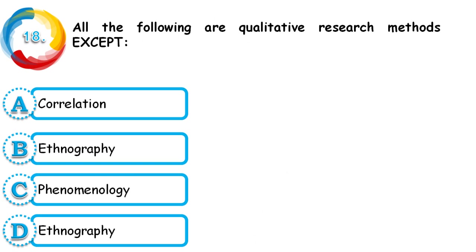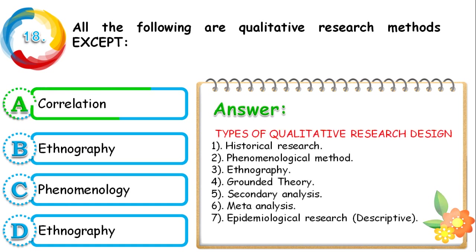Question 18: All of the following are qualitative research methods except — correlation, ethnography, phenomenology, or ethnography? The correct answer is correlation, which comes under quantitative methods. Qualitative research designs include historical research, phenomenological method, ethnography, grounded theory, secondary analysis, meta-analysis, and epidemiological/descriptive research.